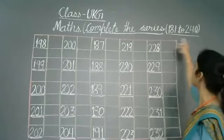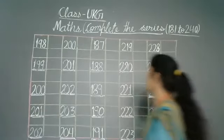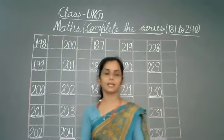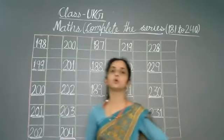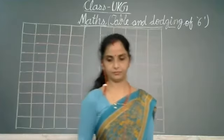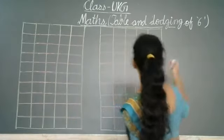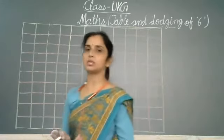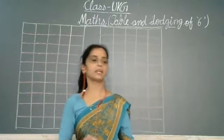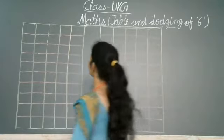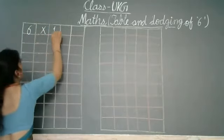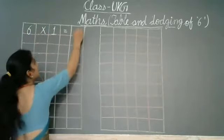Speak with me: 228, 229, 230, 231, 232. This completes our series from one hundred eighty-one to two hundred forty. Now along with this we will do a topic — we have done tables up to five. Today we will do the table of six. So let's start with the table of six.